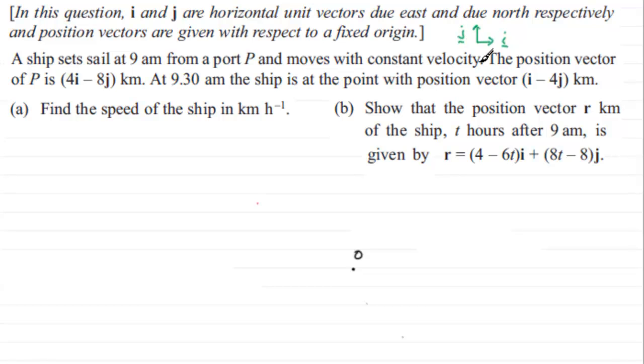Now if I'm going to go to our port P which is 4i minus 8j, four units across eight units down. Let's say that we assume it's there. So I'm going to mark that in as the point P. I'm going to give it just the coordinates that would be four across eight down. So four minus eight. And that is where our ship is at 9am. So we'll just put that as 0900 hours.